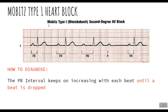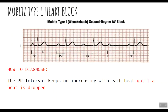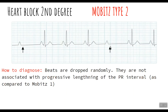In Mobitz type 2, the beats are dropped randomly — any beat can be dropped and the dropped beats are not preceded by progressive lengthening of the PR interval, unlike Mobitz type 1 where the PR interval kept prolonging until a beat was dropped. In Mobitz type 2, the PR interval remains constant and then suddenly, out of nowhere, there is a dropped beat.